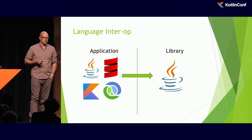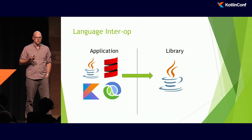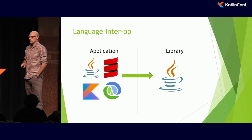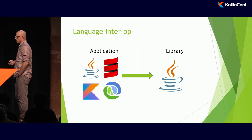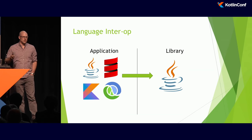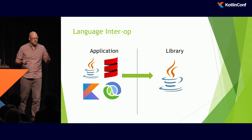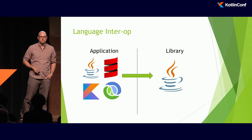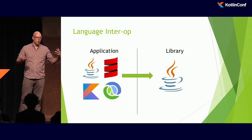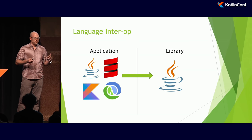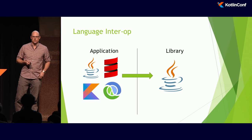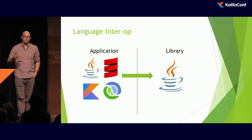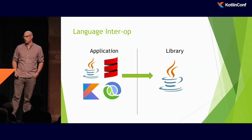Each new dependency is a new point of failure. Each new dependency is another potential version conflict. If we can avoid it, then we should. We want libraries we're vending out to take as minimal dependencies as possible. So I still think if you're vending a library and want to maximize reach in the Java ecosystem, it still makes a lot of sense to write that library in Java. But that doesn't mean we miss out on the cool things in Kotlin — and that's really what I'm going to talk about today.